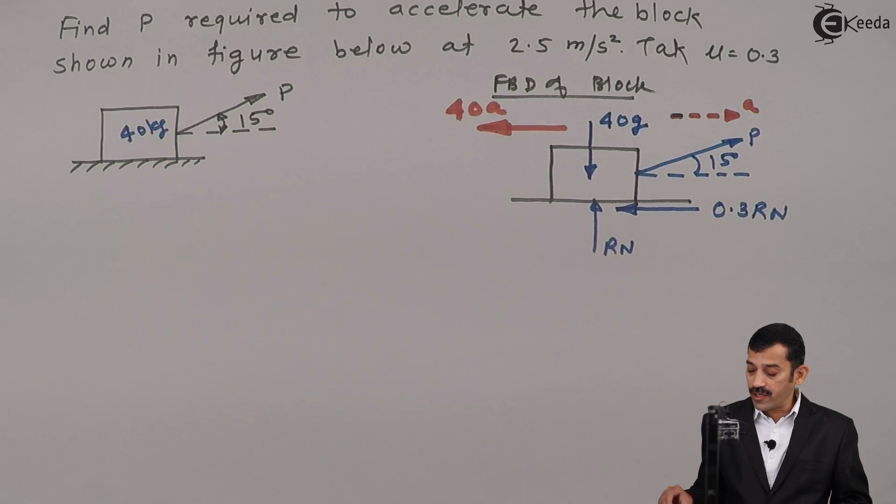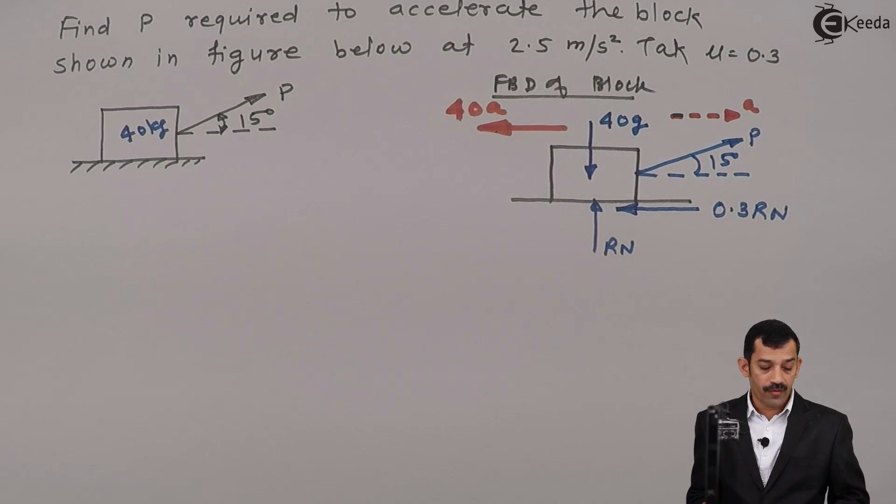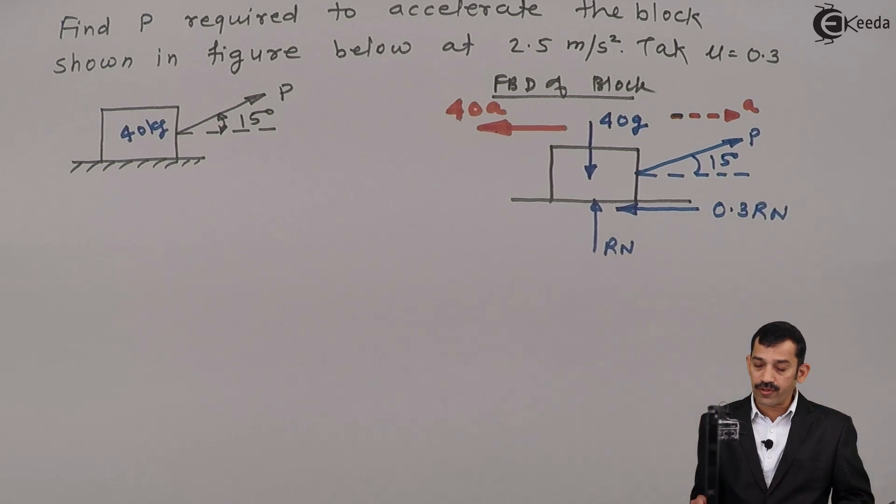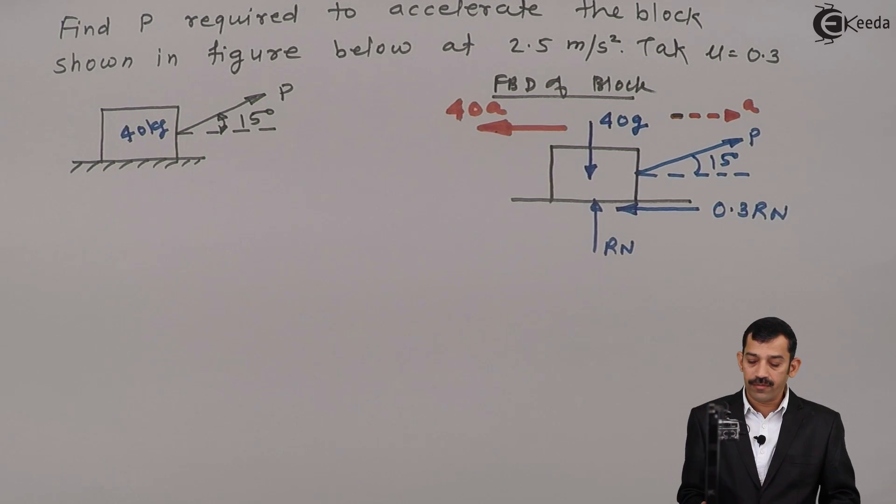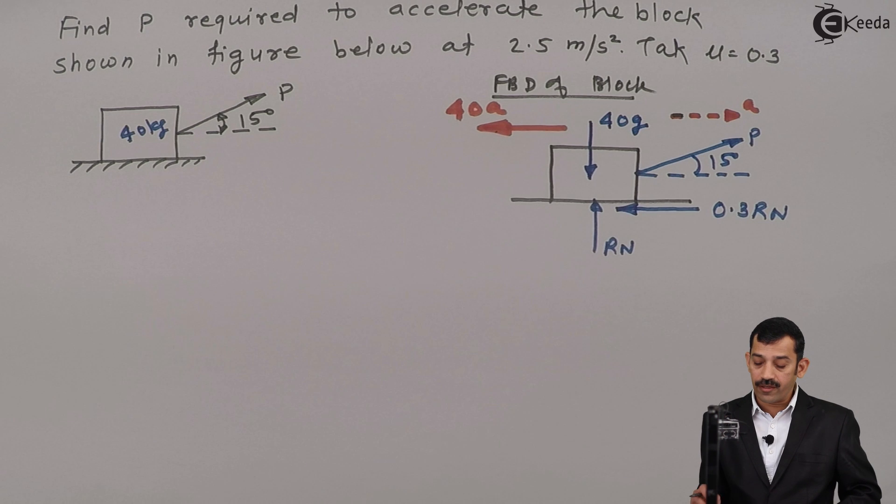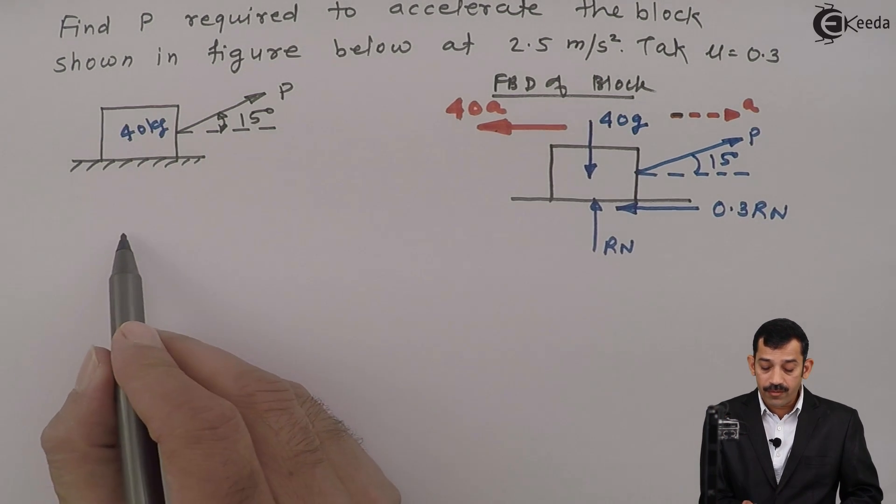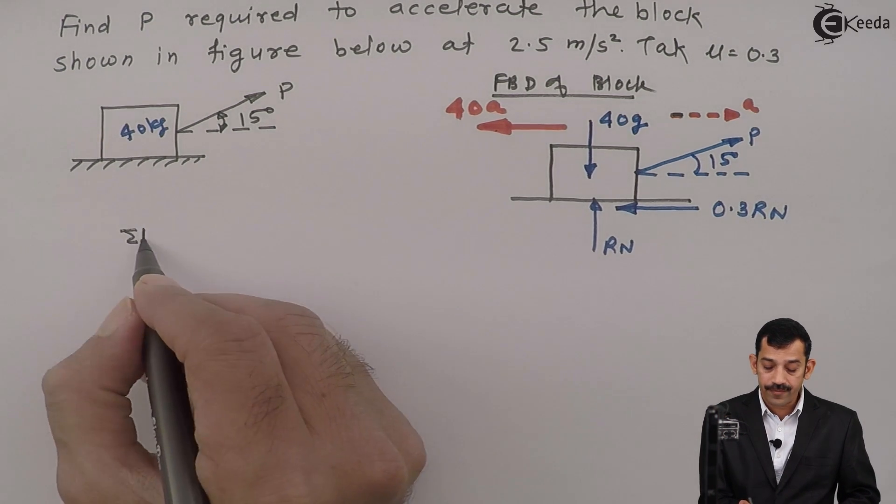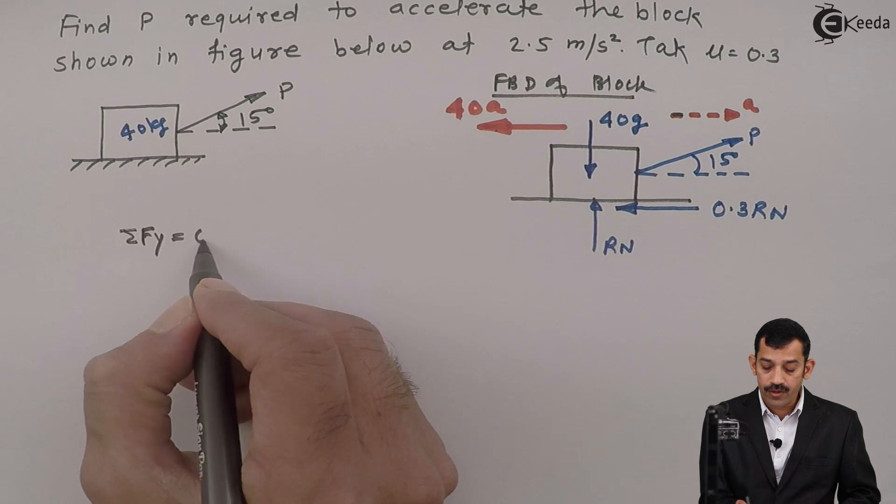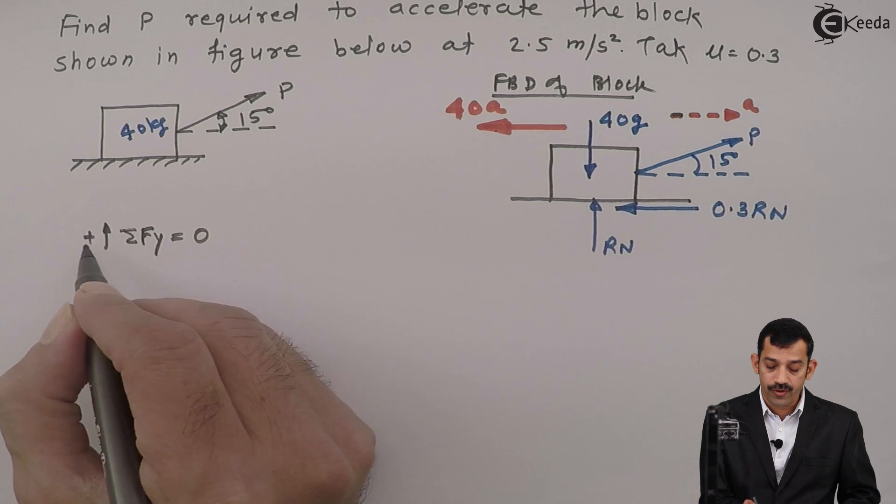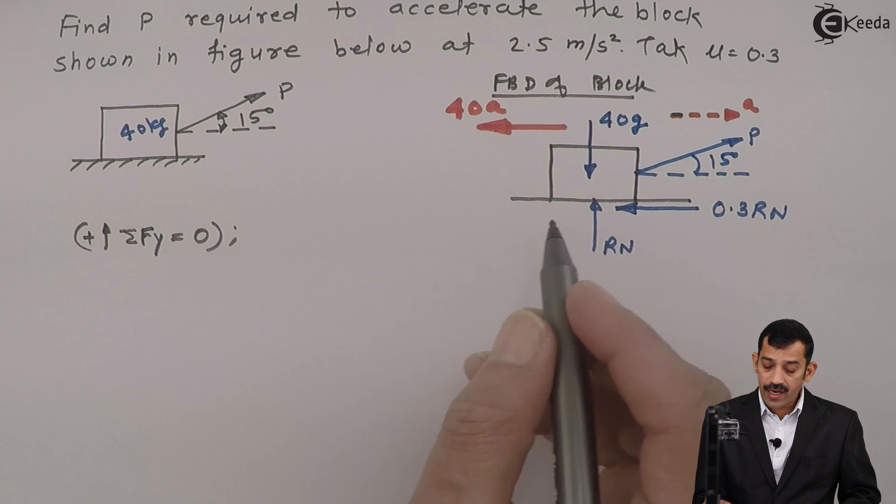This is the complete free body diagram. Now first we will find Rn by applying the equation along the y-axis. Rn cannot be found directly; we will get it in terms of unknown force P. Summation of Fy equals 0, assuming upward force is positive. Rn upward.